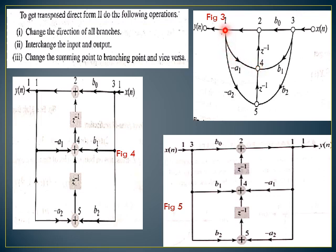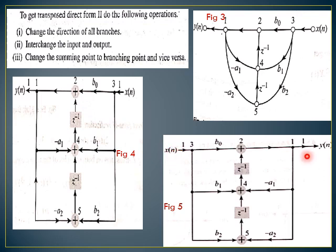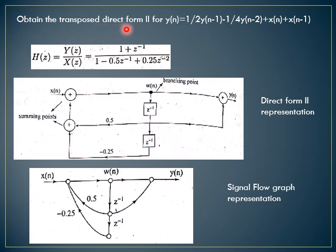The adder nodes 2, 4, and 5 become summing points; the rest become branch points or nodes with similar direction. We also need to interchange the input and output with respect to poles and zeros - just flip this. Again you get x(n) and y(n) with b1, b2, -a1, -a2. This is how you draw the transpose structure. Obtain the transpose direct form 2 for the given difference equation y(n).